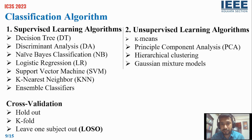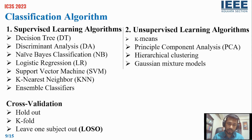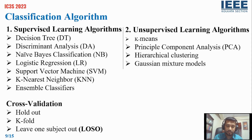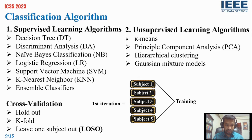We used a cross-validation approach because it categorizes the data into training and testing. The test set is predicted using the training dataset, and the important value to validate is gaining high accuracy. Cross-validation has three approaches: hold-out, k-fold, and leave-one-subject-out. In this research, we used the leave-one-subject-out (LOSO) approach because we have low data samples. LOSO means one subject is extracted for testing while the other subjects are used for training. For example, with six subjects, LOSO trains five subjects for each iteration and uses one subject for testing.